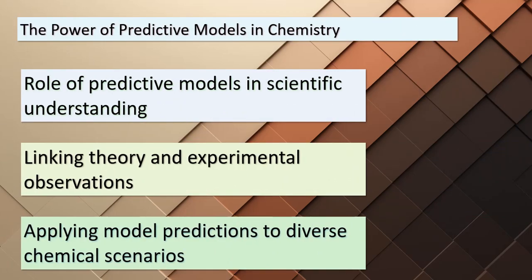We've embarked on an awe-inspiring journey through the world of carbon-carbon bond lengths and their predictions. The big takeaway is about the power of predictive models in shaping our understanding of the natural world. These models bridge the gap between theoretical predictions and real-world observations. As we apply these predictions to diverse chemical scenarios, we must also recognize the importance of refining our models over time. Science thrives on curiosity, collaboration, and the courage to embrace uncertainties.